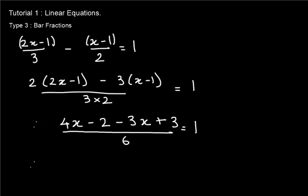Therefore we get 4x minus 3x is x, minus 2 plus 3 is 1, x plus 1 equal to 6. The 6 in the denominator is taken to the other side. Therefore we get x equal to 6 minus 1, which is equal to 5.